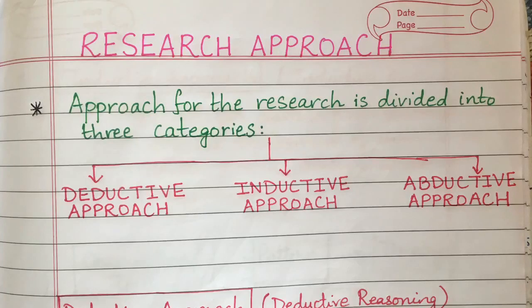A research approach can be best described as a general plan and procedure for conducting your research study — how you approach your research plan or study.